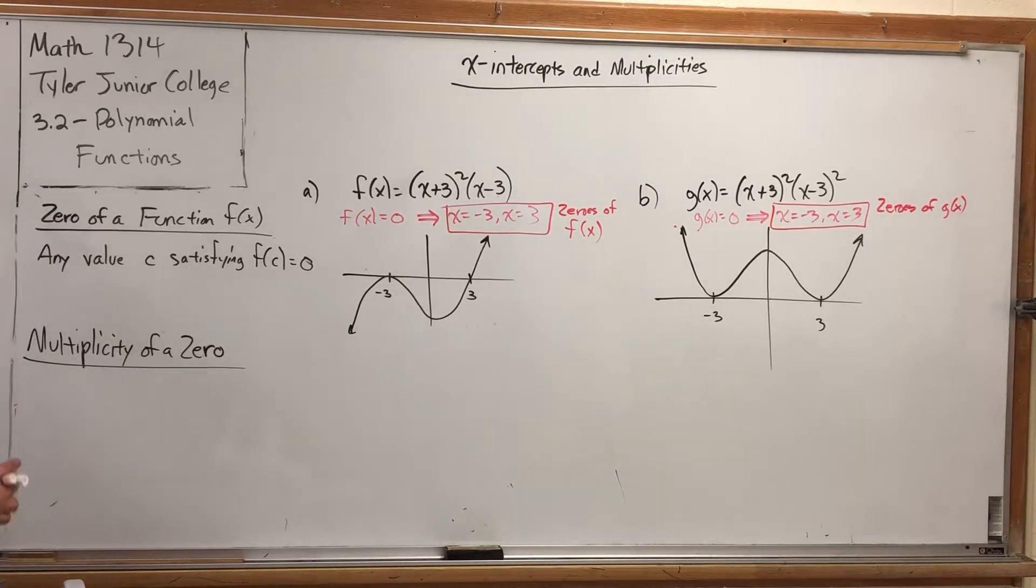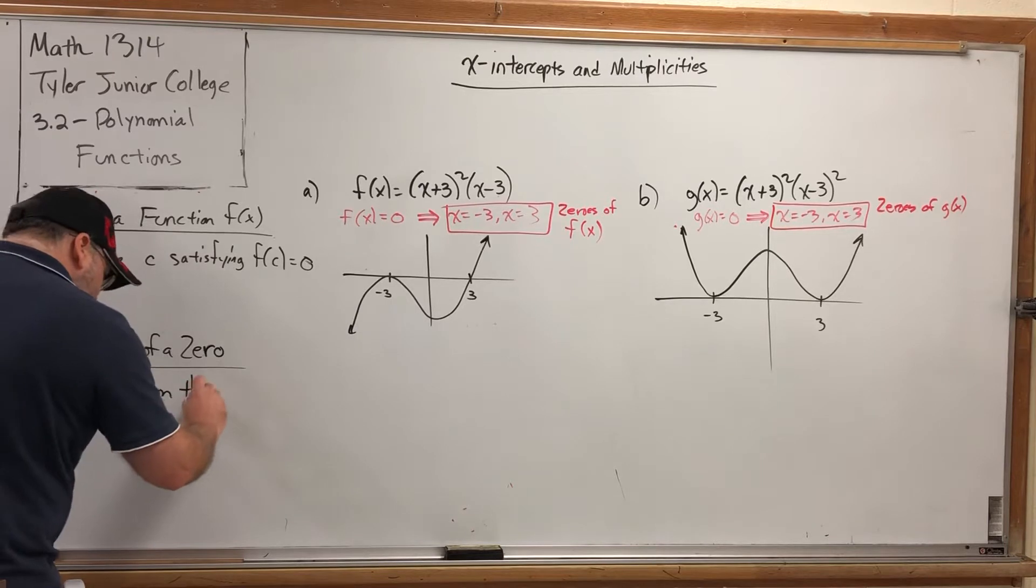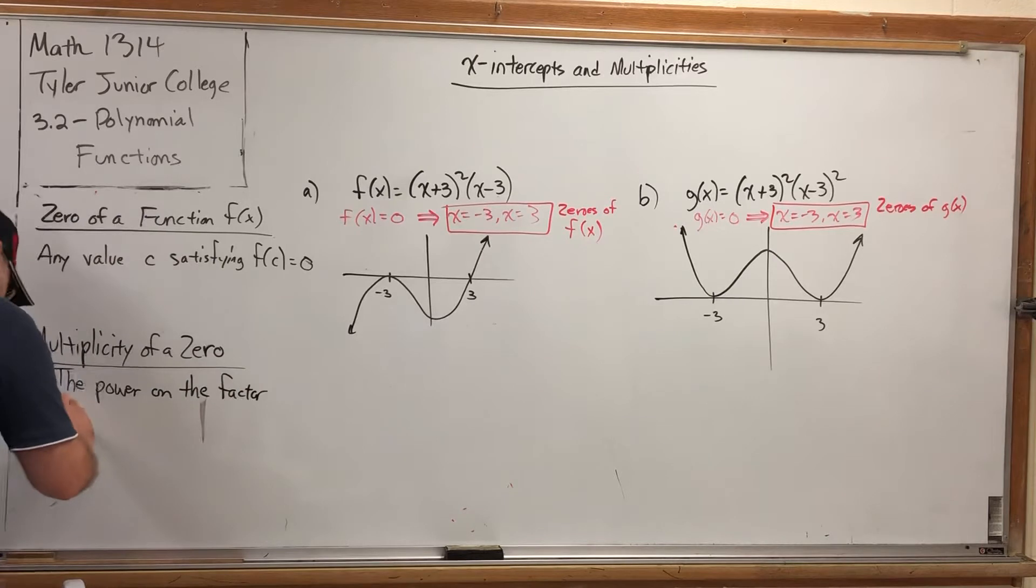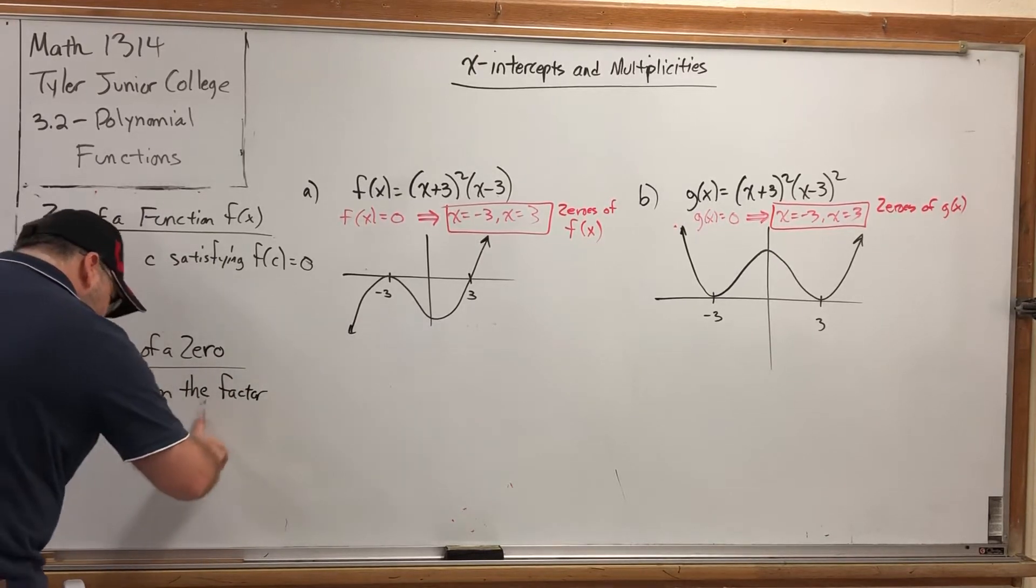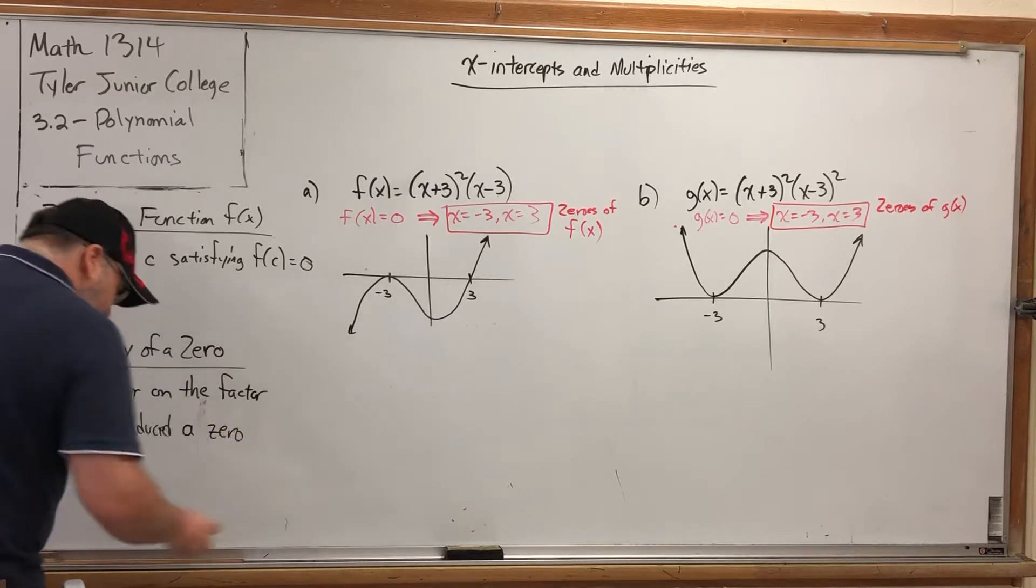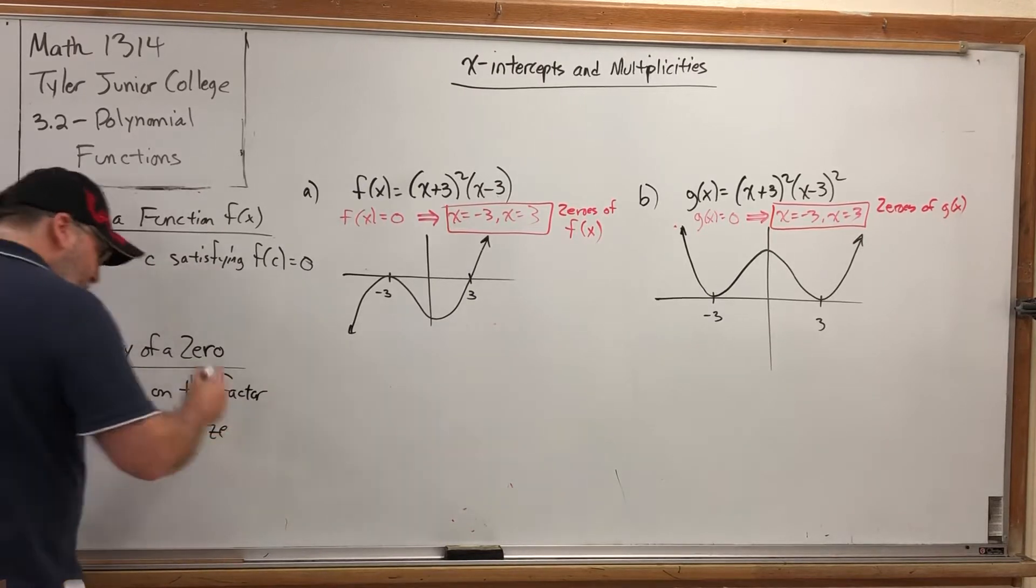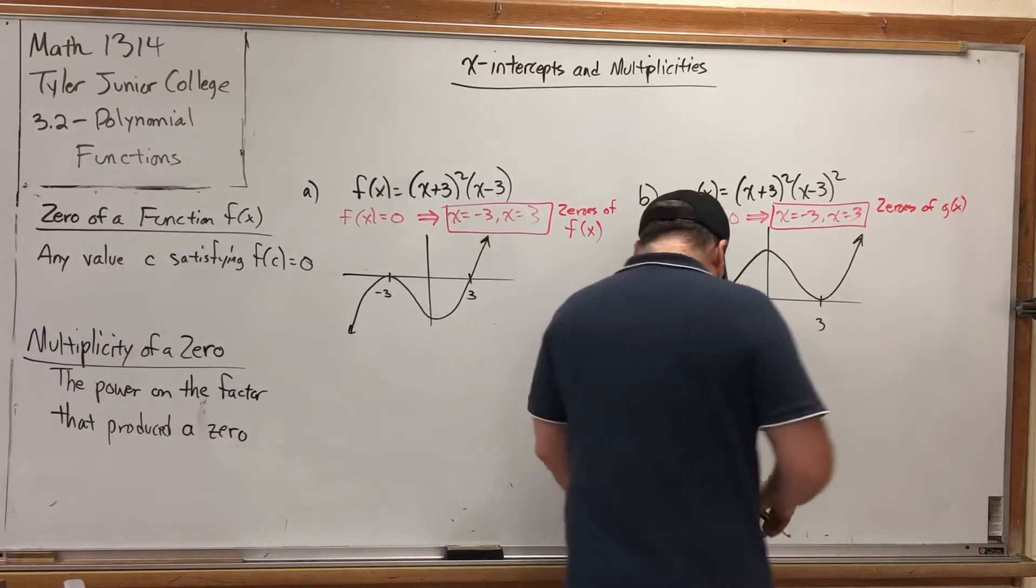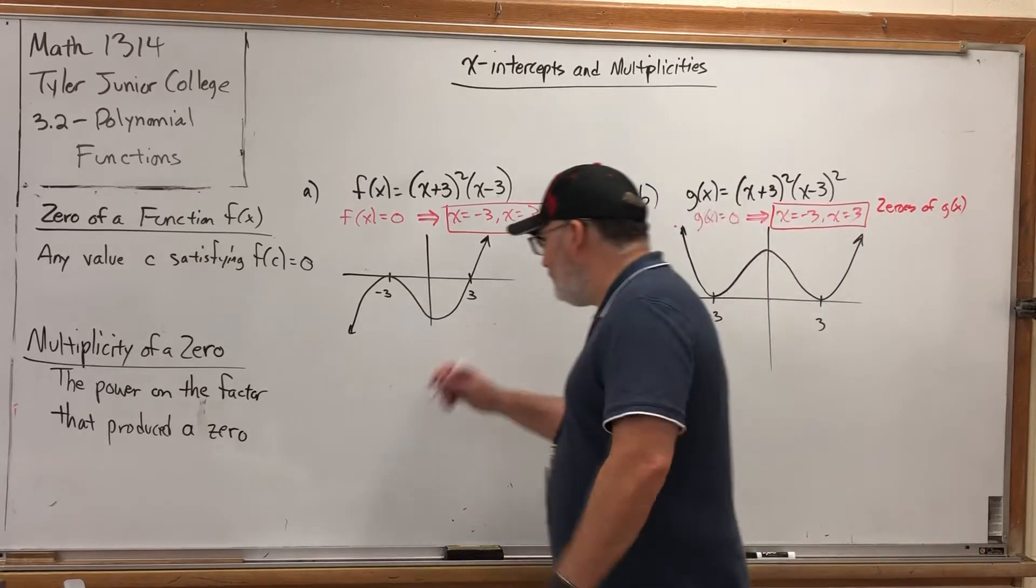Now, the multiplicity of a zero is the power on the factor that produced a zero. So in other words, the power. Now, there is a more rigorous definition of multiplicity, but it requires calculus, so we won't discuss it. So every time you have a zero, it has a multiplicity.